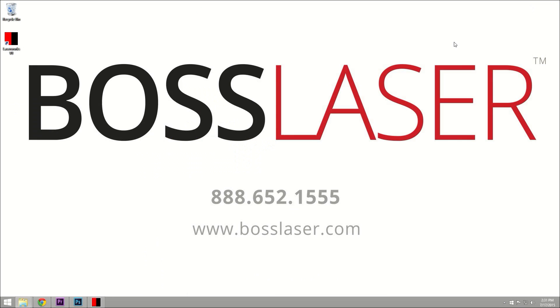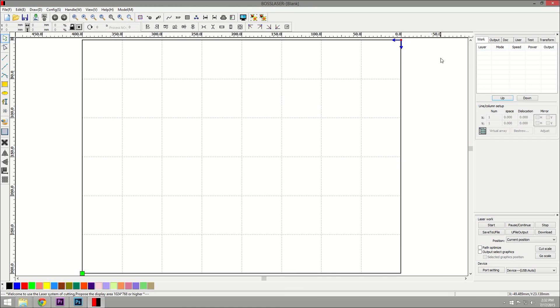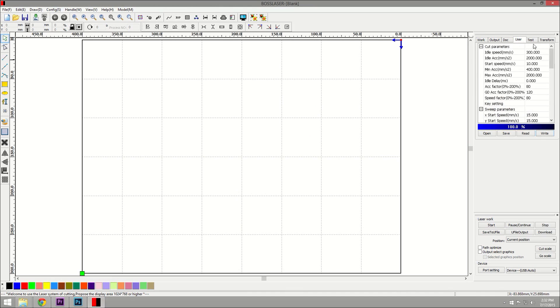At this point your laser should be turned on and connected to your PC via the blue USB cord. First, I'm going to open up LaserWorks. On the top right side of the screen, click the User tab. Click the Read button to make sure that your computer is communicating with your laser. Under the User tab, scroll down until you see the Rotating category.